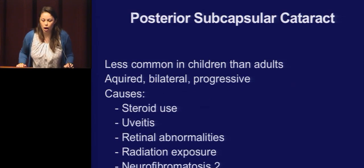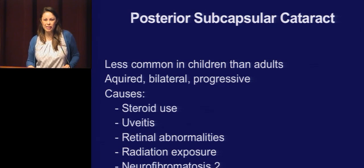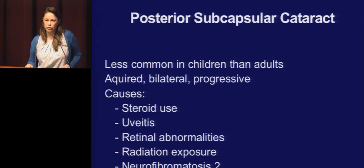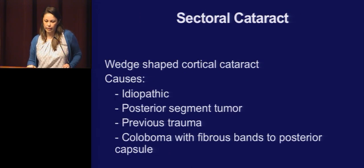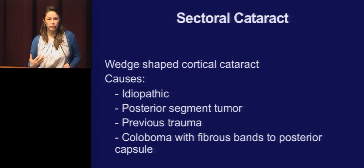PSC is less common in kids than in adults. It's acquired, bilateral, and progressive, with many of the same causes as in adults — we just don't see it as much. Diabetes really doesn't cause this that much in kids. A sectoral cataract is usually small and not visually significant, but if you see it, you really have to rule out posterior pathology — rule out a posterior segment tumor. If there's any question, get a B-scan to rule out a tumor.